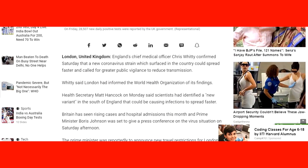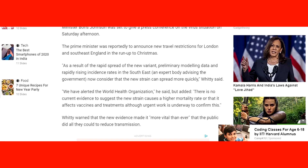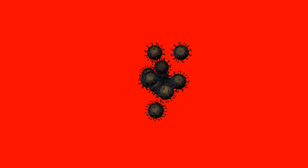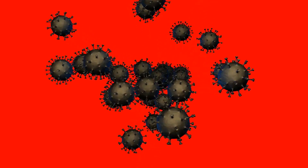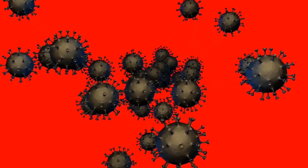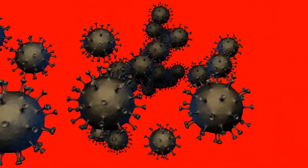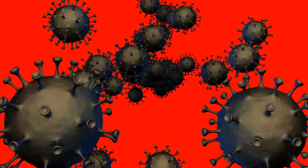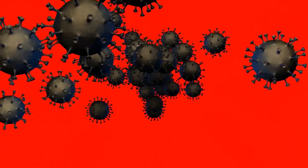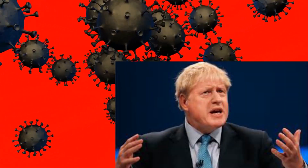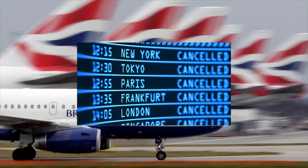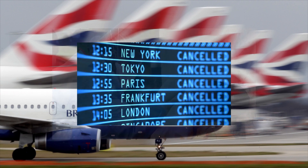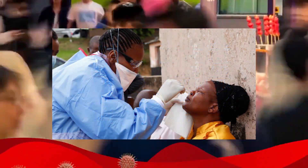This new virus is capable of spreading rapidly. Due to this, B.1.1.7 is 70% more contagious than the original coronavirus — this is the official statement from the Prime Minister of Britain. This is the reason the international community has shut down airlines to the UK. Within two weeks, the virus started to spread rapidly in Africa.